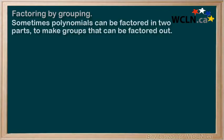Sometimes, polynomials can be factored in two parts to make groups that can be factored out. In the example below, we can see that we have four terms.